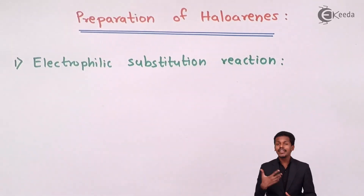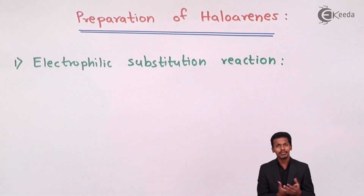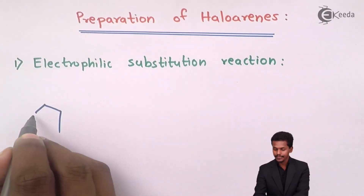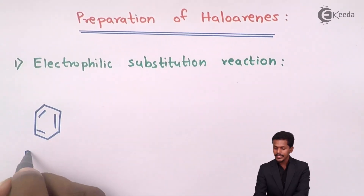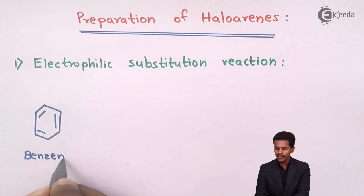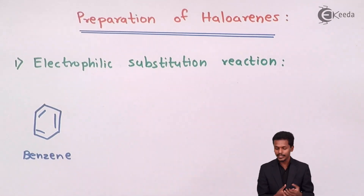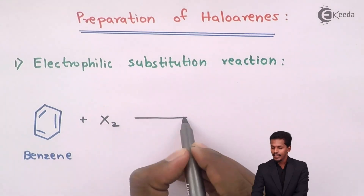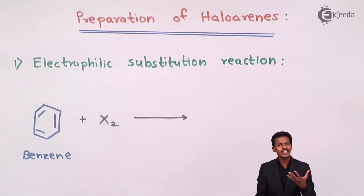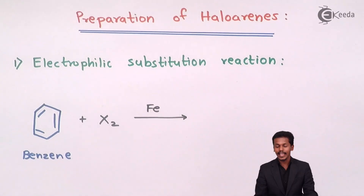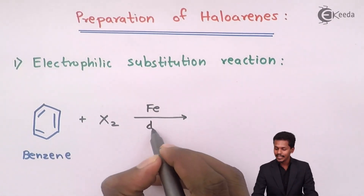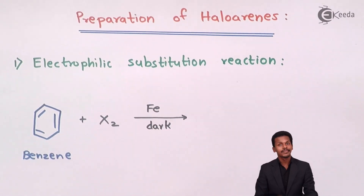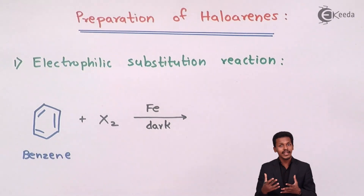Let me talk about this with the help of an example. Suppose we have to prepare a haloarene from an aromatic compound — in this case, benzene. We introduce the aromatic compound along with a halogen in molecular form, that is X₂. However, this reaction doesn't take place on its own; we have to provide a catalyst — iron (Fe) — and the process should be done in a dark environment. This is an electrophilic substitution reaction.